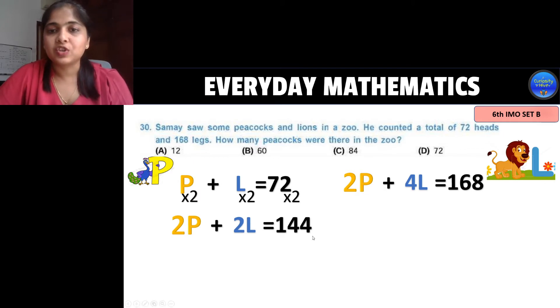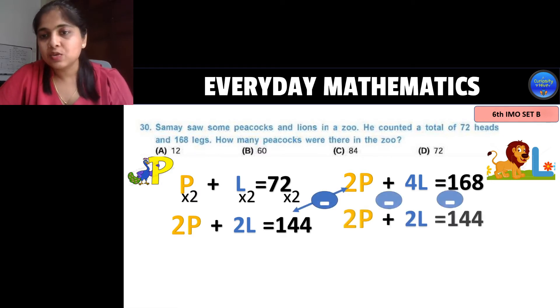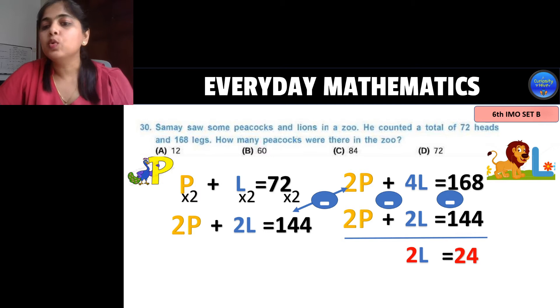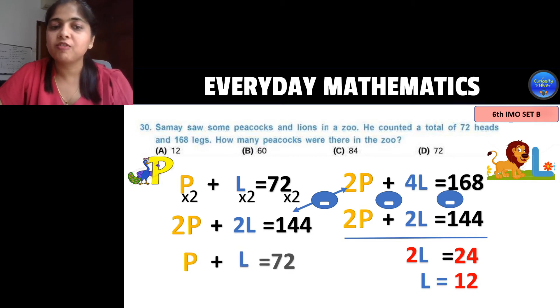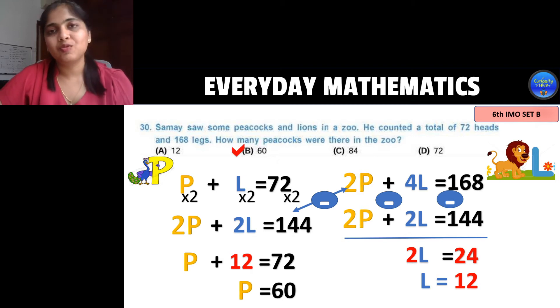Now this equation and the other equation can be subtracted. So let's subtract these two equations and what we will find? Well, 2p minus 2p becomes 0. So you are left with 2l which is equal to 24. Now 2 times l is 24 so l is 12. So you get your lion as 12. Now let's go back to our equation of peacock plus lion is 72. We know lion is 12. So your peacock is equal to 60 and that's how you get your answer b which is 60 that shows the number of peacocks that were there in the zoo.